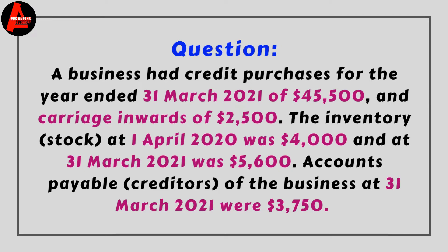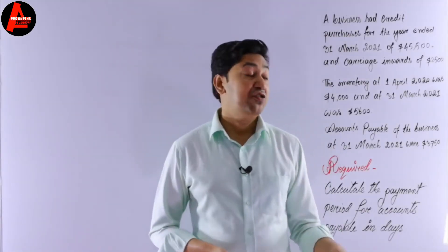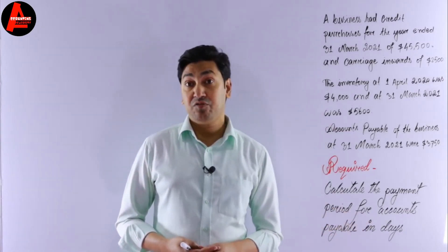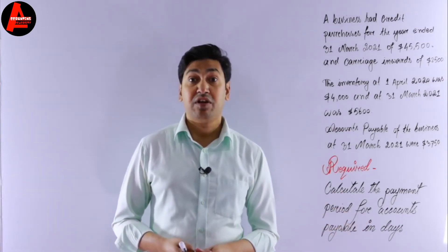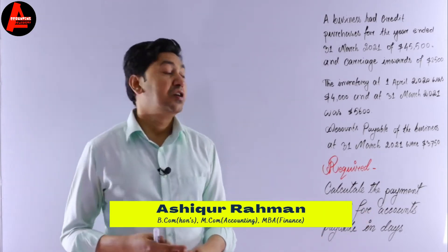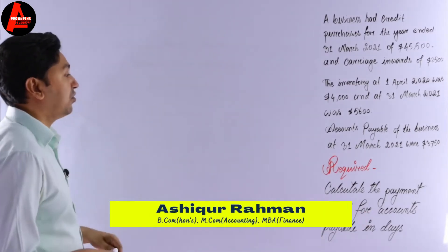Then, as written in the question, accounts payable at 31st March 2020 were $3,750. This value is required to calculate this ratio. So first of all, we need to know the formula to calculate this payment period.